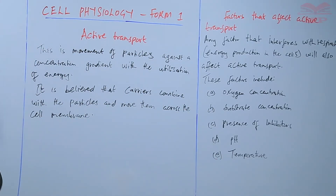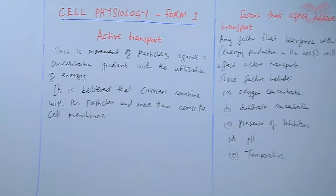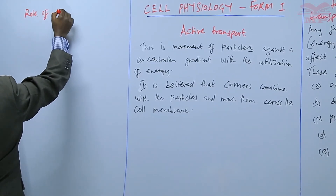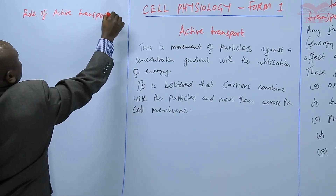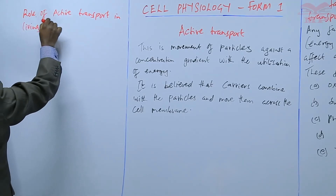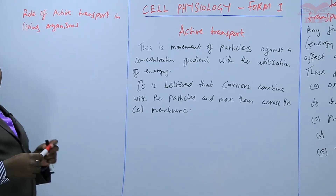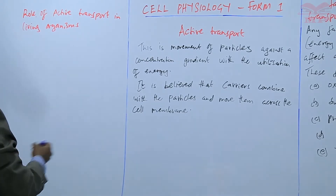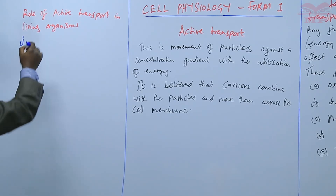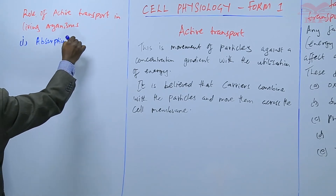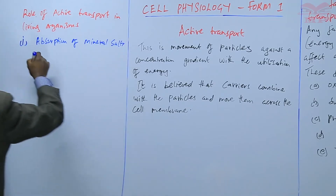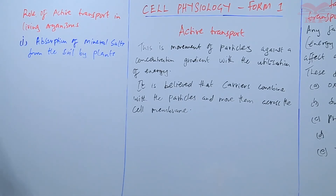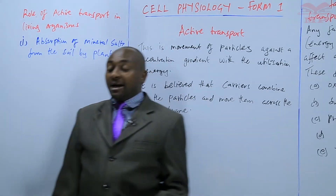Lastly we look at the role of active transport in living organisms — in other words, how is active transport important in living organisms. Number one, we have absorption of mineral salts from the soil by plants, so plants will absorb mineral salts from the soil by active transport.